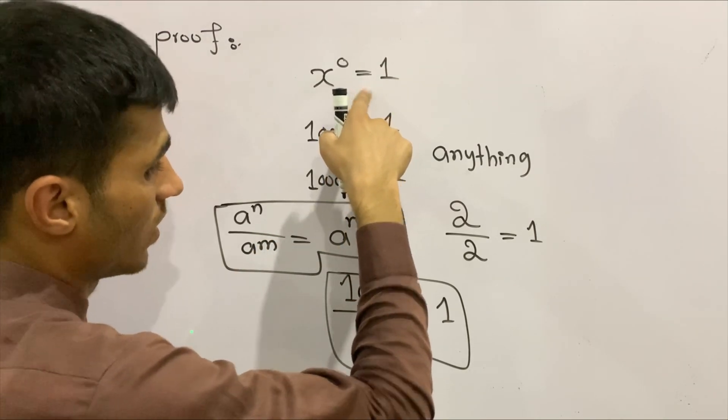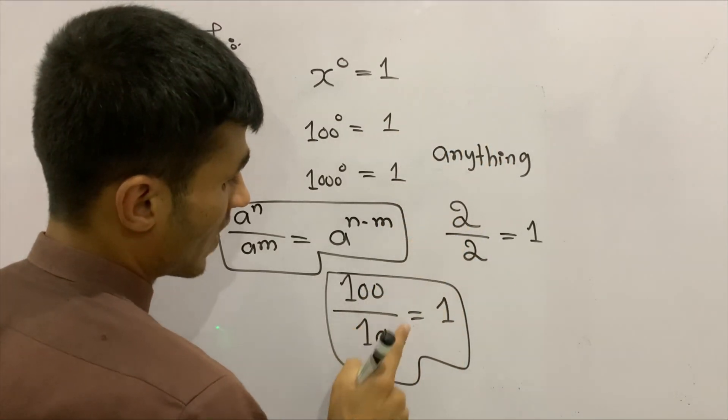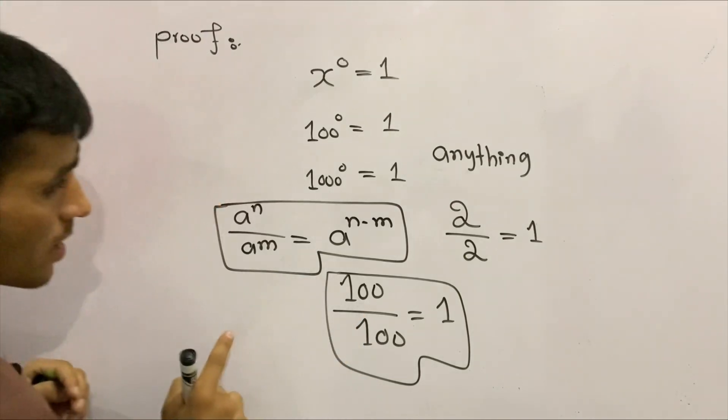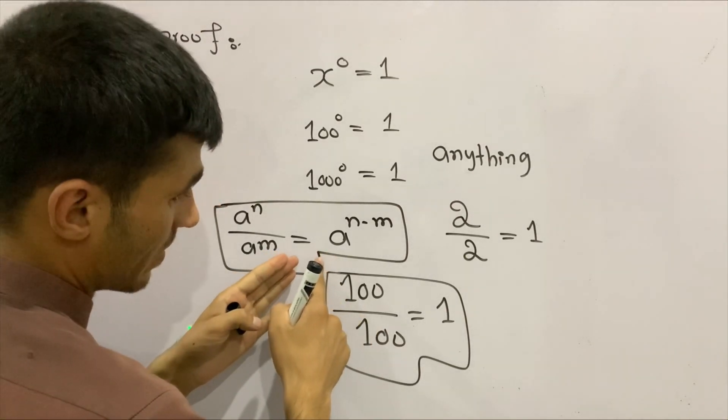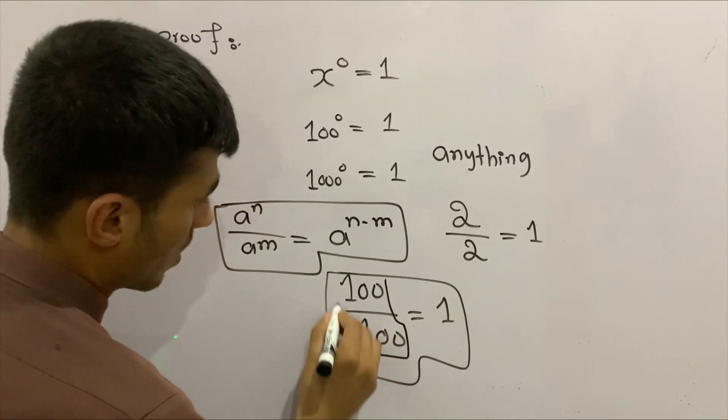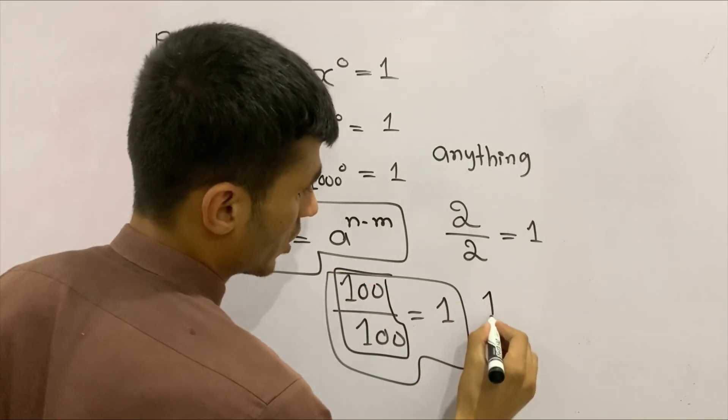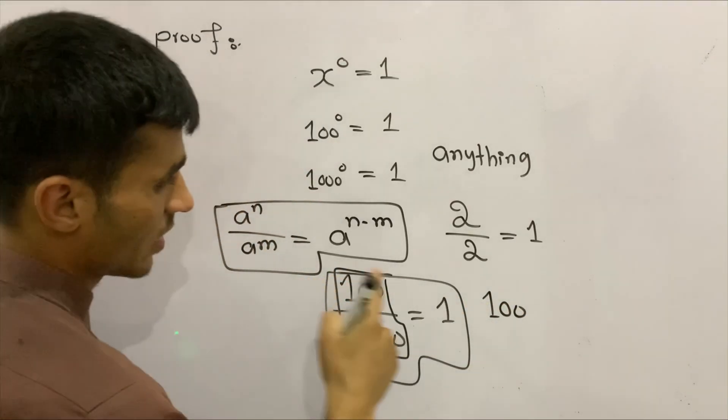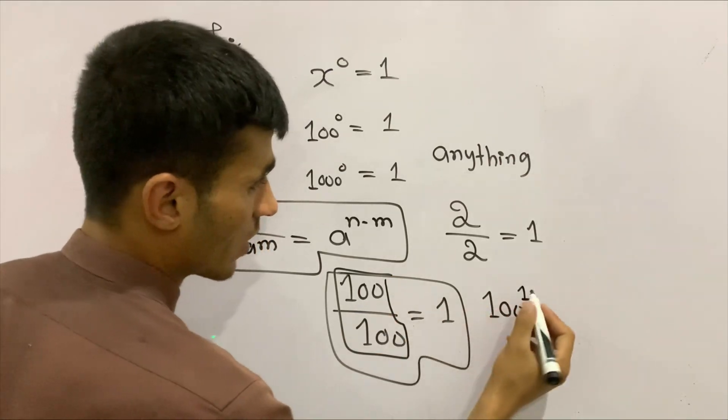How? Look here. I have 100 divided by 100 equals one. But if I think of this according to the given law of exponents, we have the same base, which is 100. What is the exponent here? Of course the exponent is one on both sides.